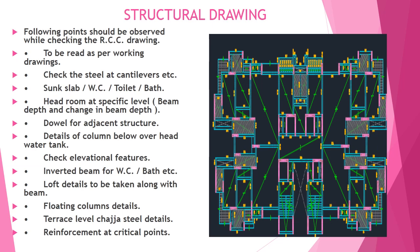Structural drawings: the following points are to be noted. Structural drawings are to be read in conjunction with the working drawings. Check the steel at cantilevers, verify the sunk slab as per the architectural drawing, headroom at specific levels, dowels for auxiliary structures, details of columns below the overhead water tank, check elevational features, inverted beams for WC and bathroom, loft details, floating column details, terrace level parapet details, and reinforcement at critical points. The adjoining structural drawing will indicate how the drawings are to be read.